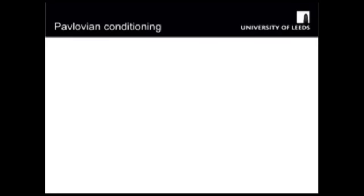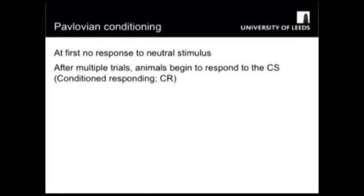Everything I'm going to tell you about today comes from Pavlov's work. Initially, there's no response to the neutral stimulus — why would there be? It's neutral. There may perhaps be an unconditioned response, a slight flinching if there's a tone or rearing if there's a light, but that very quickly habituates. As trials proceed between the CS, the neutral stimulus, and the US, the biologically relevant stimulus, the behaviour of the animal changes.